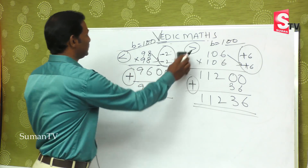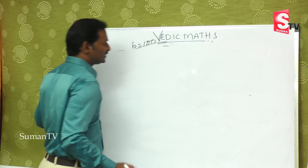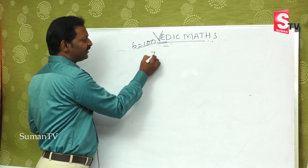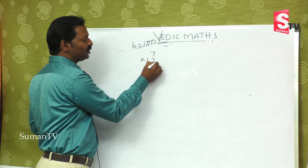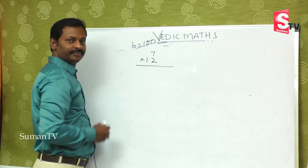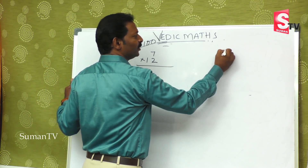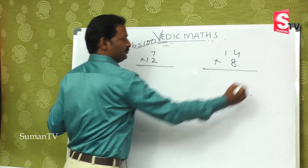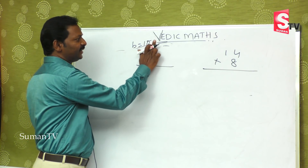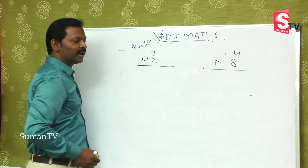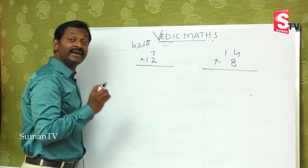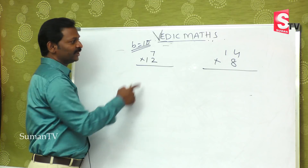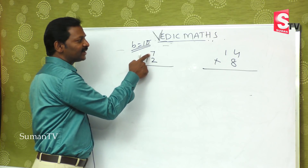So that is what we are going to see now. First I will take single-digit examples. Suppose 7 is multiplied by 12, or 14 is multiplied by 8. These two numbers are not close to 10, so the base value is 10.